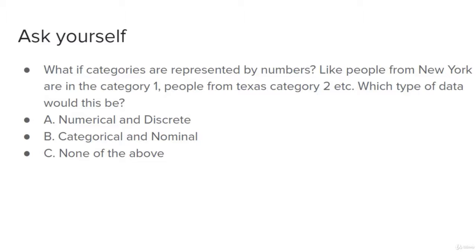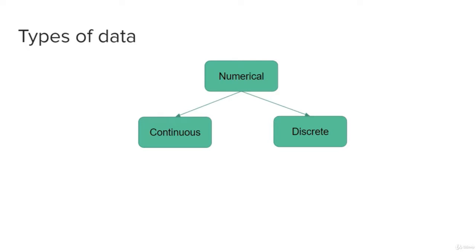Since we can neither count nor measure the values in that example, and the categories are mutually exclusive, we classify it as categorical nominal. The key concept is that regardless of how a category is represented — whether by a number or an alphabet — it's important to understand the underlying concept. In machine learning and classification problems, data is often represented as numbers because computers only understand numbers, but those numbers can still be categorical nominal data.